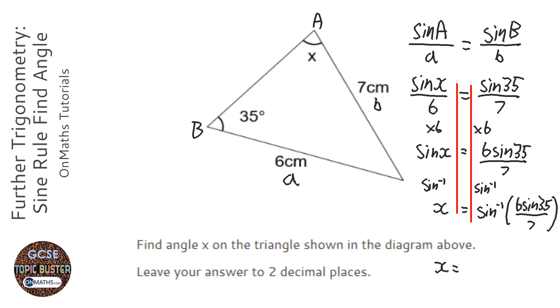So I'm going to get my calculator. Inverse sin, fraction 6, sin 35 over... Oh, I need to close the sin bracket. Over 7, close bracket. And I get 29.448 blah blah blah.